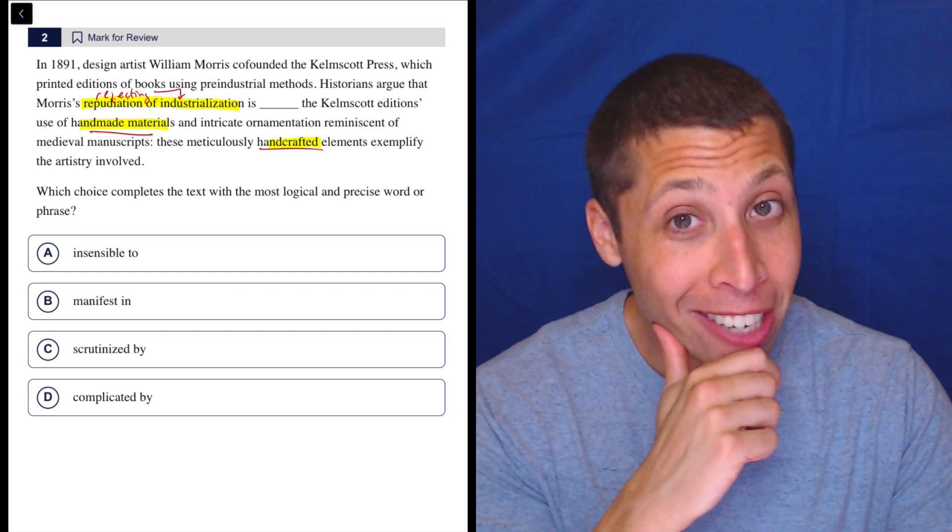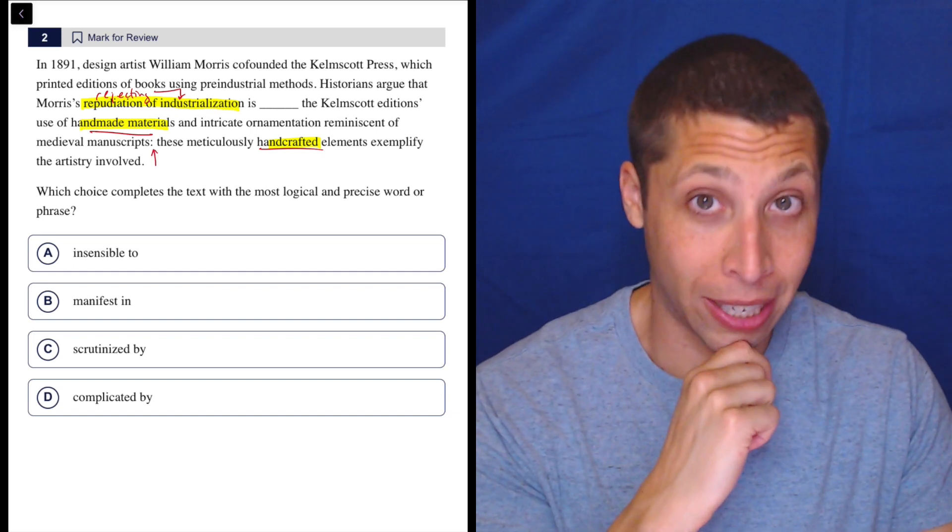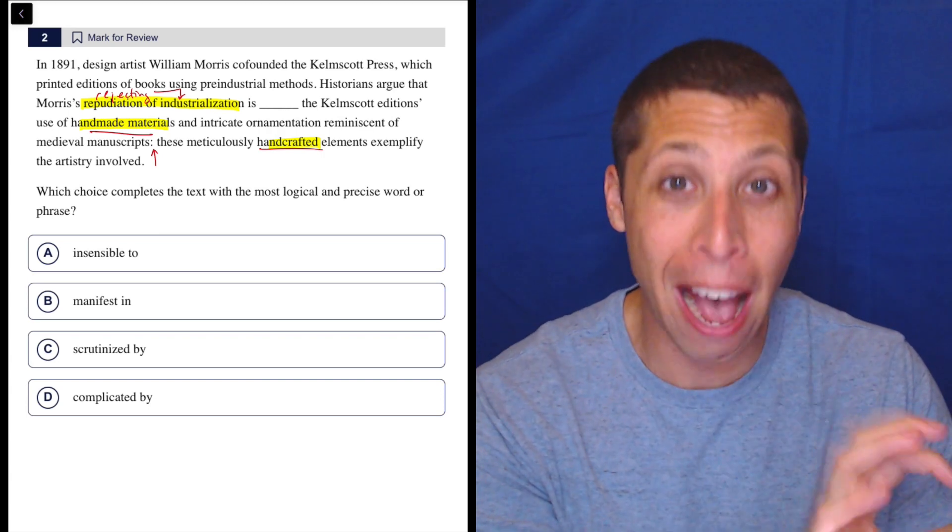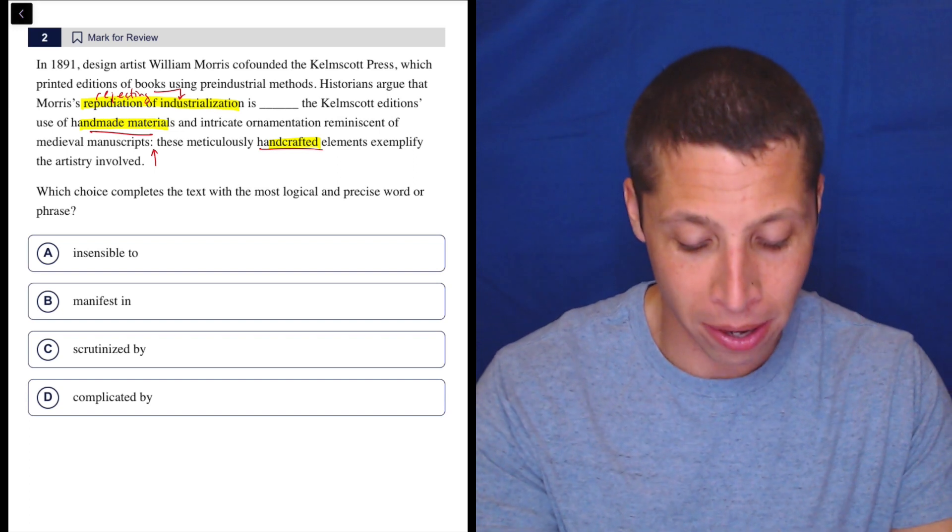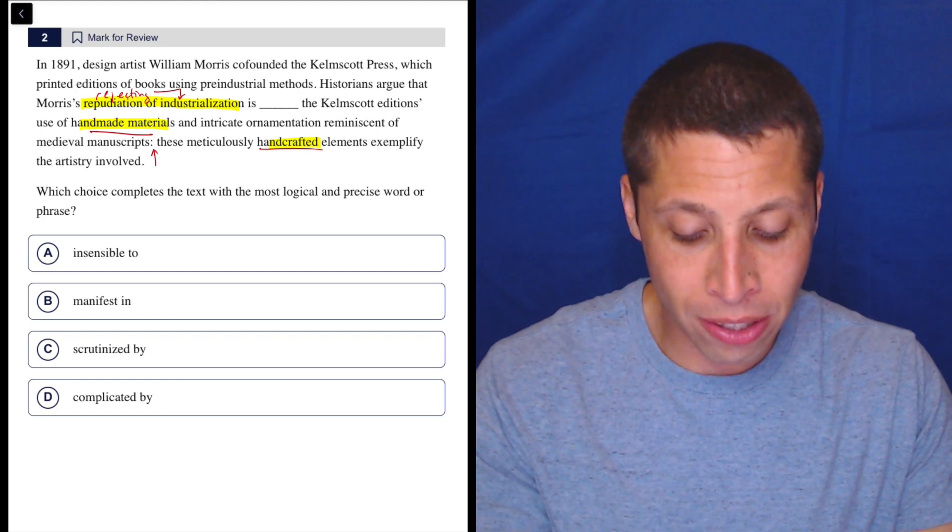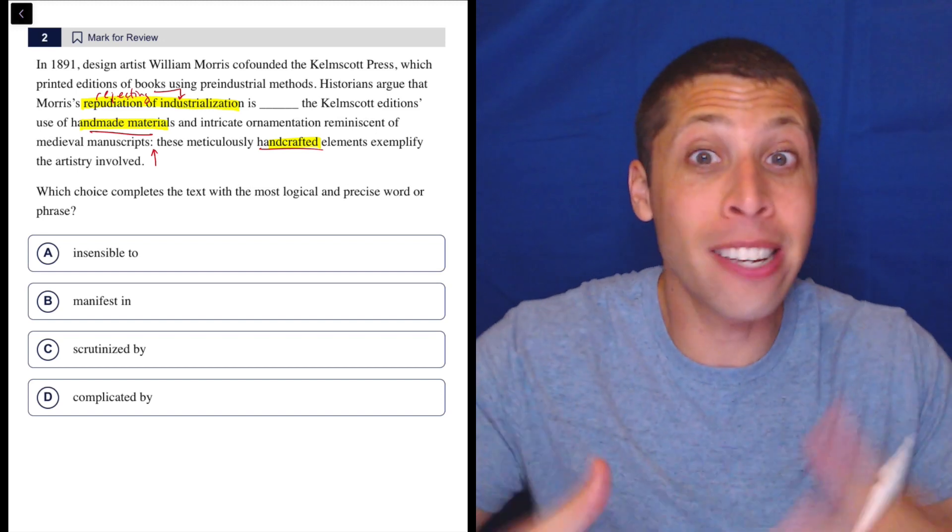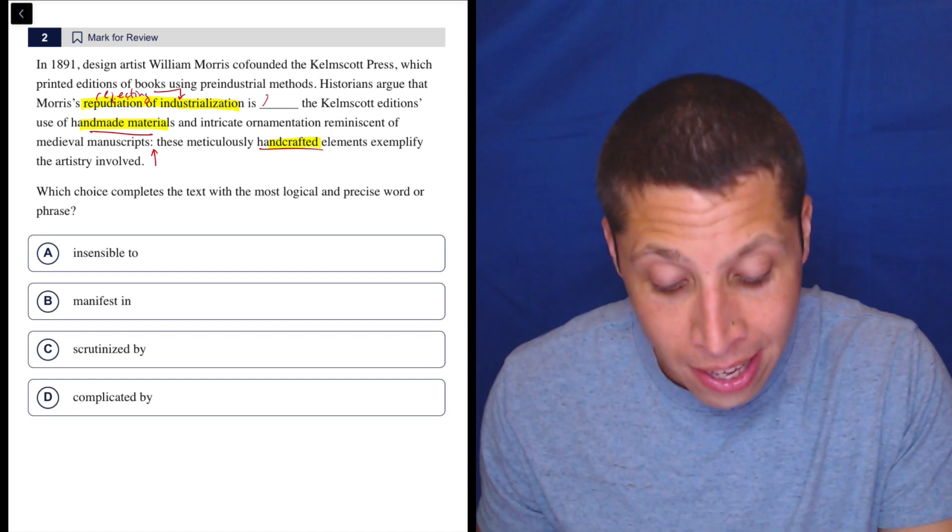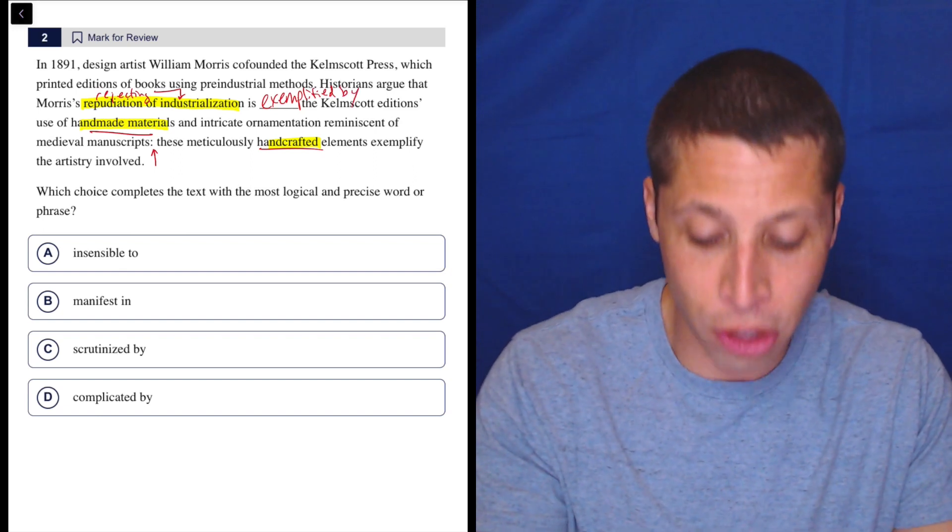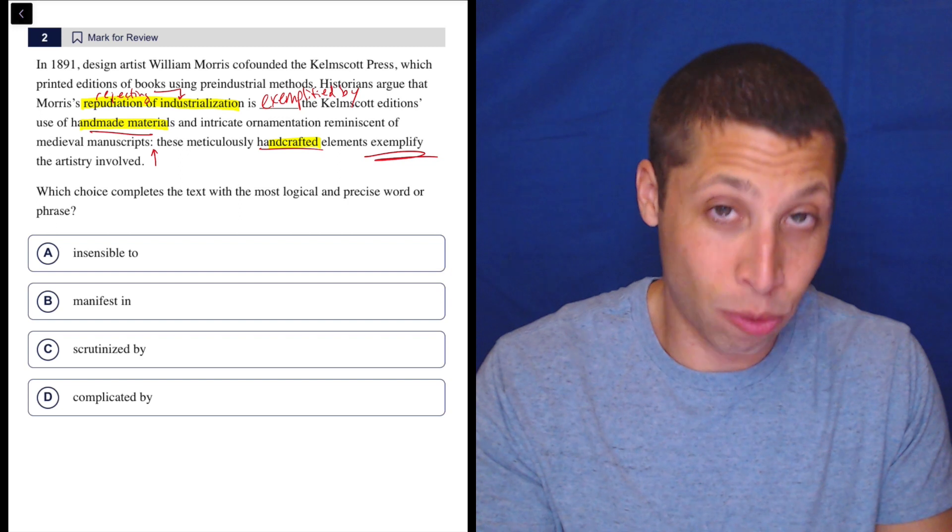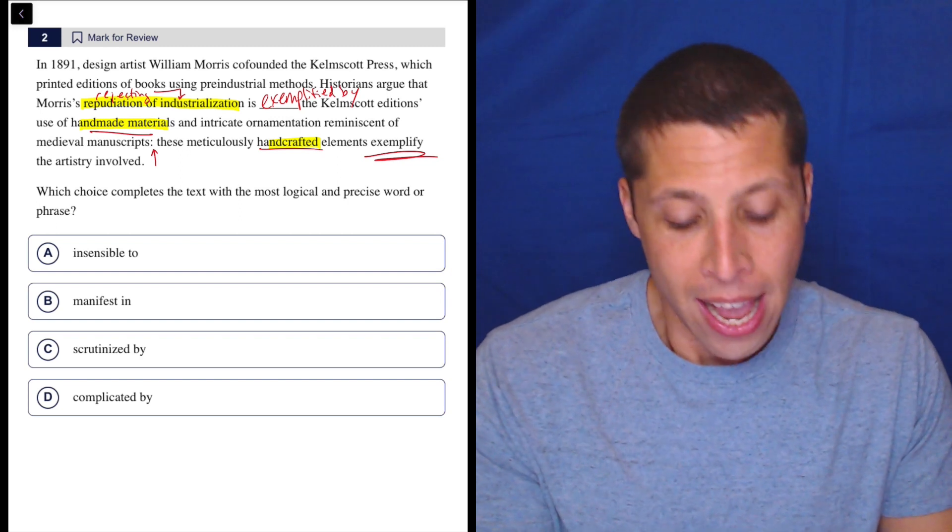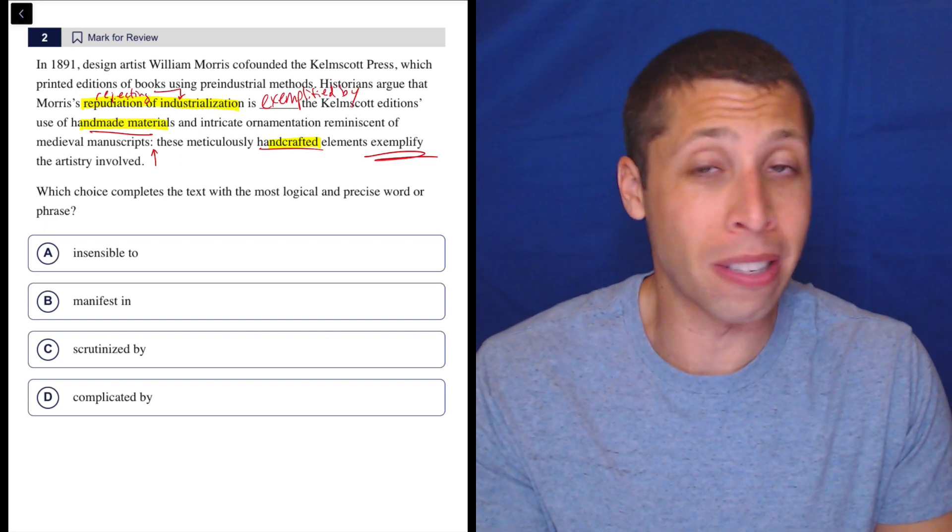But this sentence does kind of just give us the answer. We know that the colon is used when these vocab questions kind of repeat themselves. The part after the colon is usually just like another version of the part before. So these handcrafted elements exemplify the artistry involved. So his repudiation of industrialization, his handcraftedness is exemplified by the Kelmscott edition's use of handmade materials. It's repeating it. It's hard. You got to really want it, but it's there. And hopefully then that starts to get rid of some answer choices, if not give you the right one.